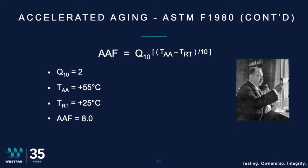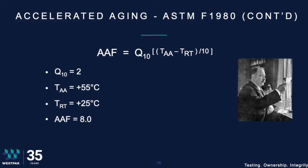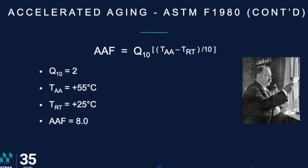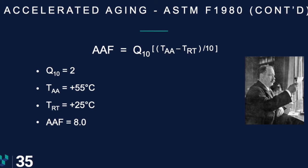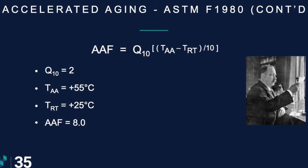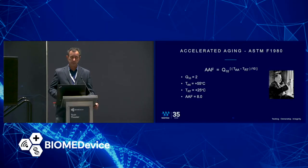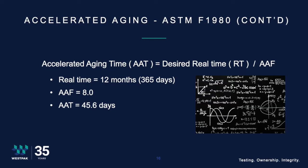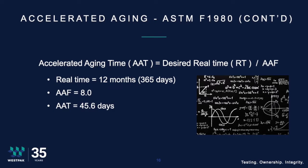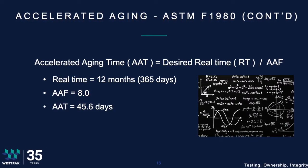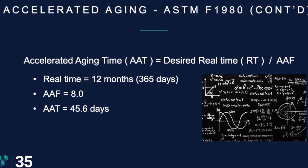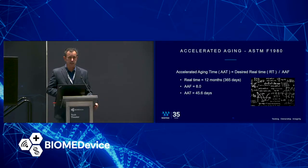The only way to change your Q10 would be to study your materials and identify where nonlinear changes occur. If you use an accelerated aging temperature of +55°C and a real-time storage temperature of +25°C, you get an accelerated aging factor of 8. Plugging that into our final formula, you get an accelerated aging time of about 45.6 days. We use that as a minimum, so rounding up plus one gives us 46 days. You can get 12 months of accelerated aging in just 46 days.